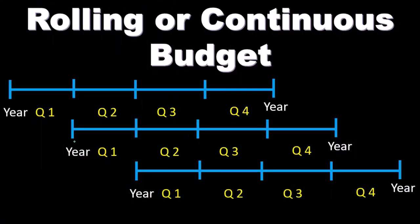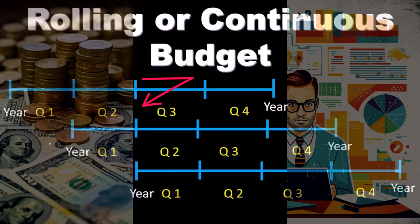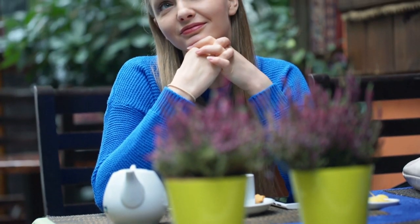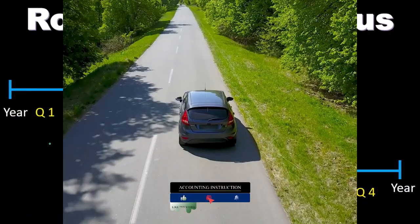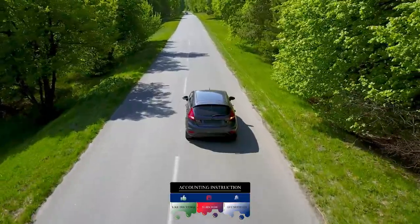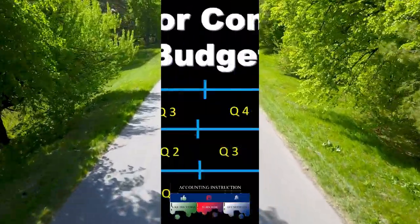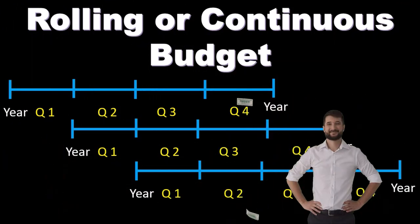The rolling budget has some benefits and costs. One cost is that it's more expensive to reset the budget after each period. Benefits include maintaining the comparison process, keeping the communication process active as we reset, and always thinking a year out into the future. You can think of it like a car driving down the road — the headlights always reach out a year ahead, giving you that consistent, forward-looking focus as you drive.